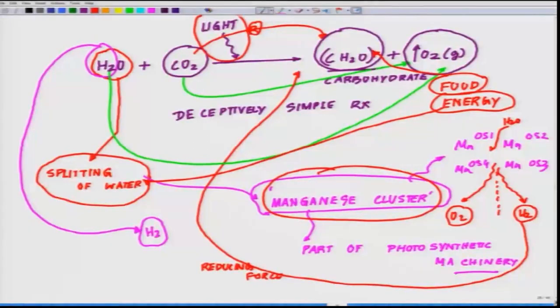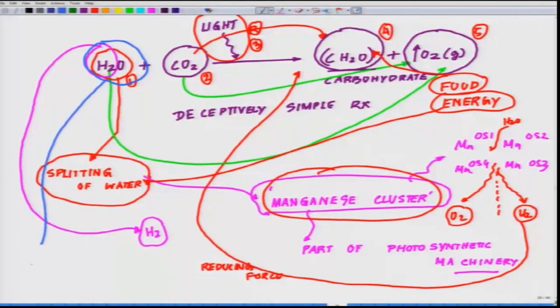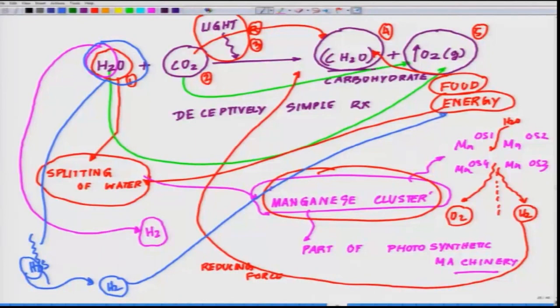Now, what is the role of light? We haven't talked about it. There are five elements I have drawn here: water, carbon dioxide, light, carbohydrate, and oxygen as byproduct. I told you that if you replace H2O with H2S, then the same thing could happen - H2S may get split up and you still can produce hydrogen as a source of very clean energy.